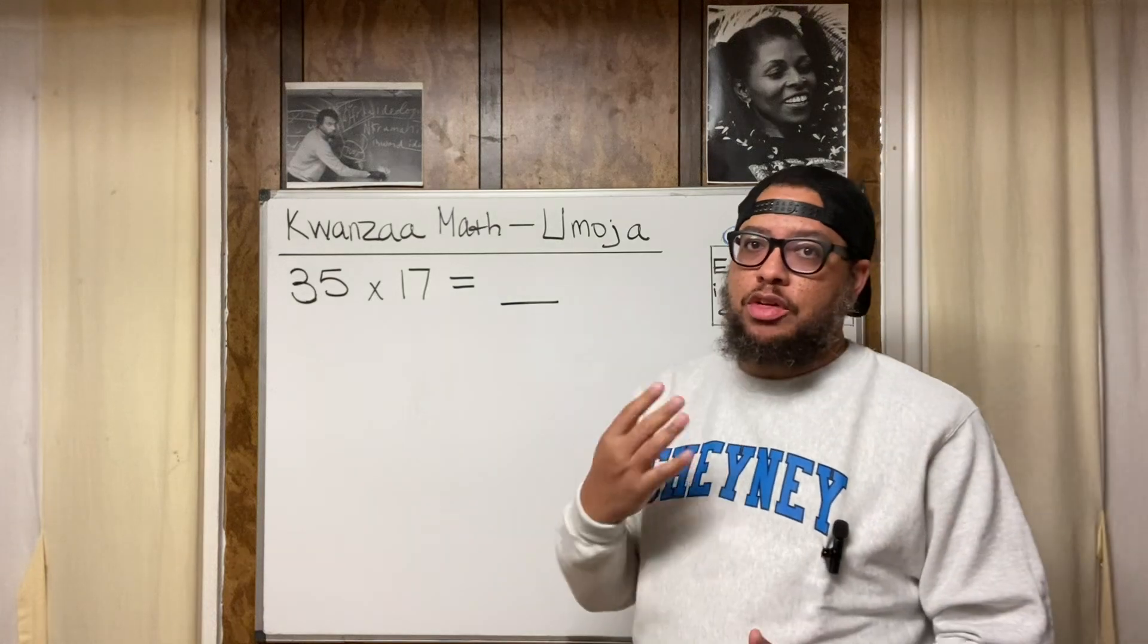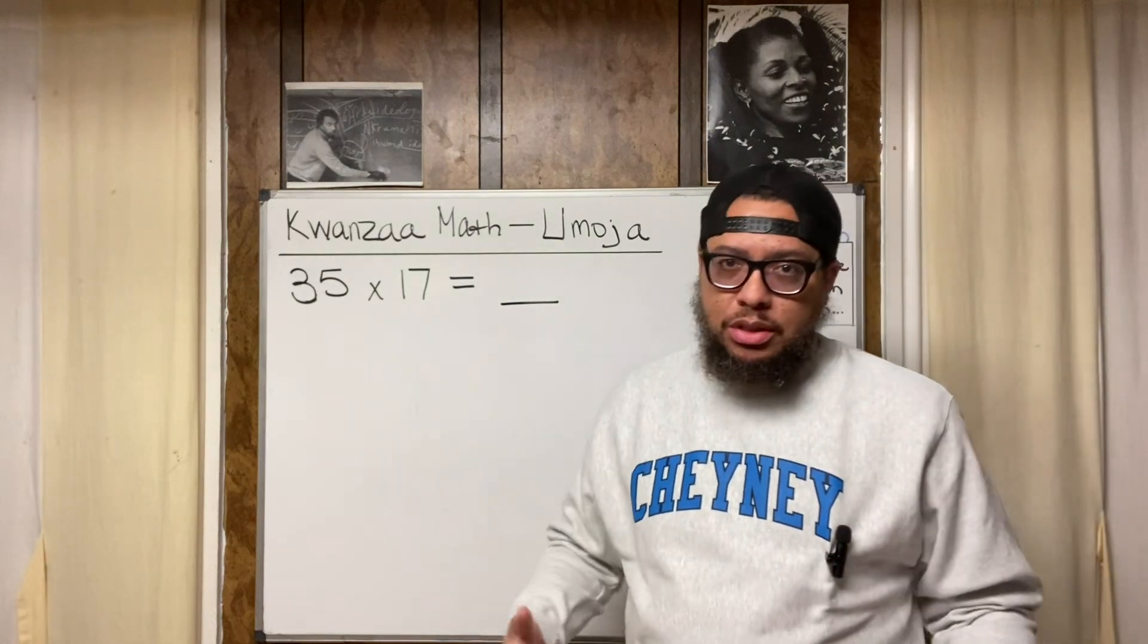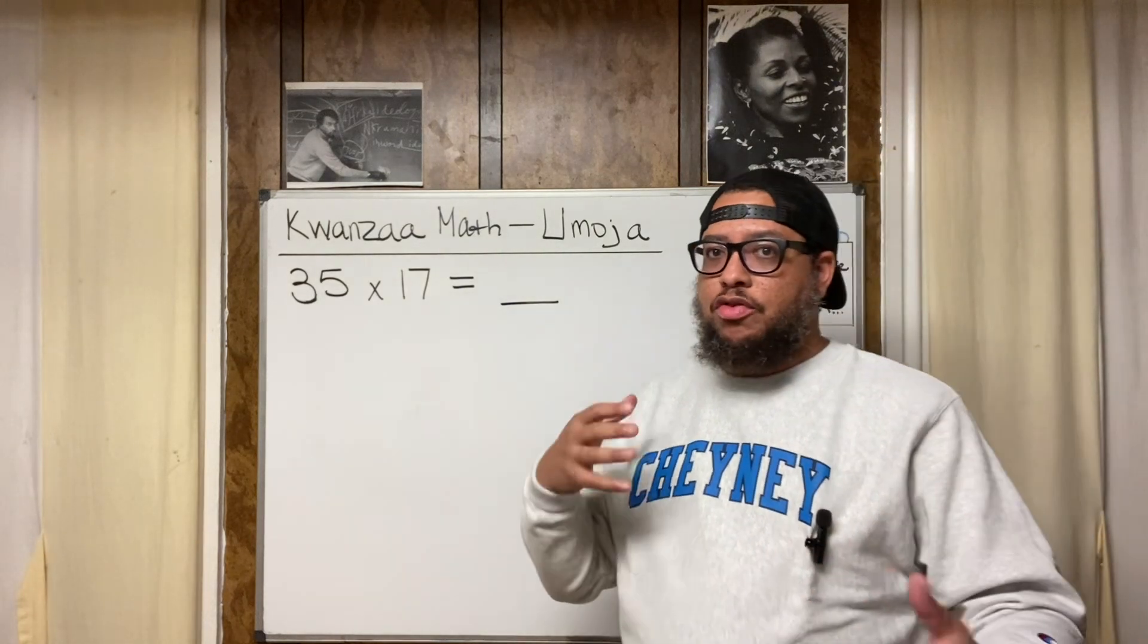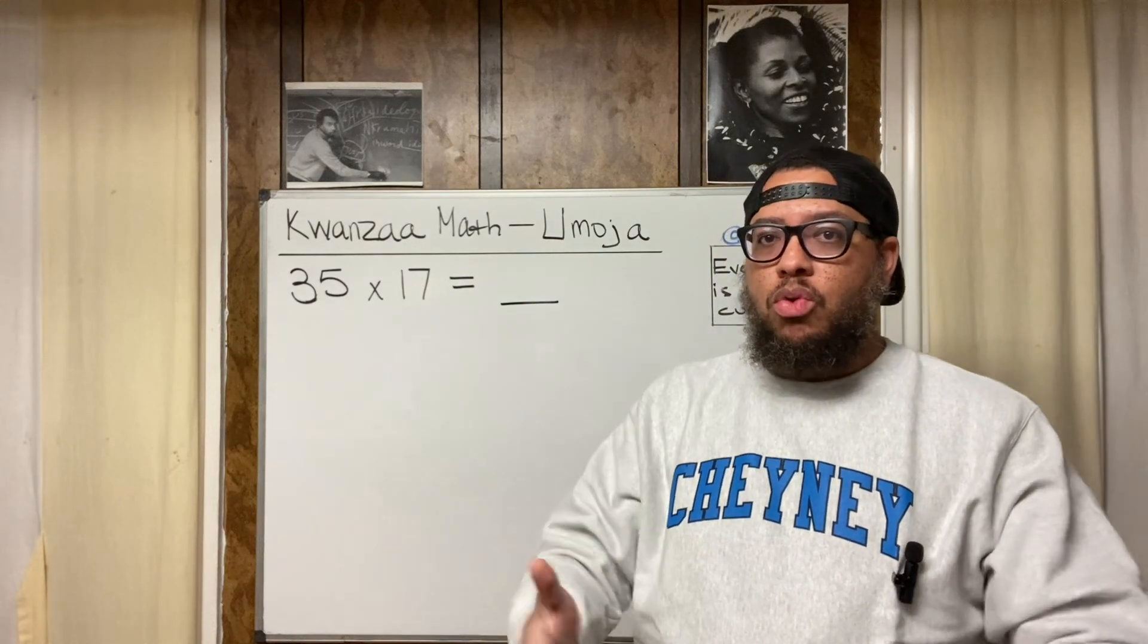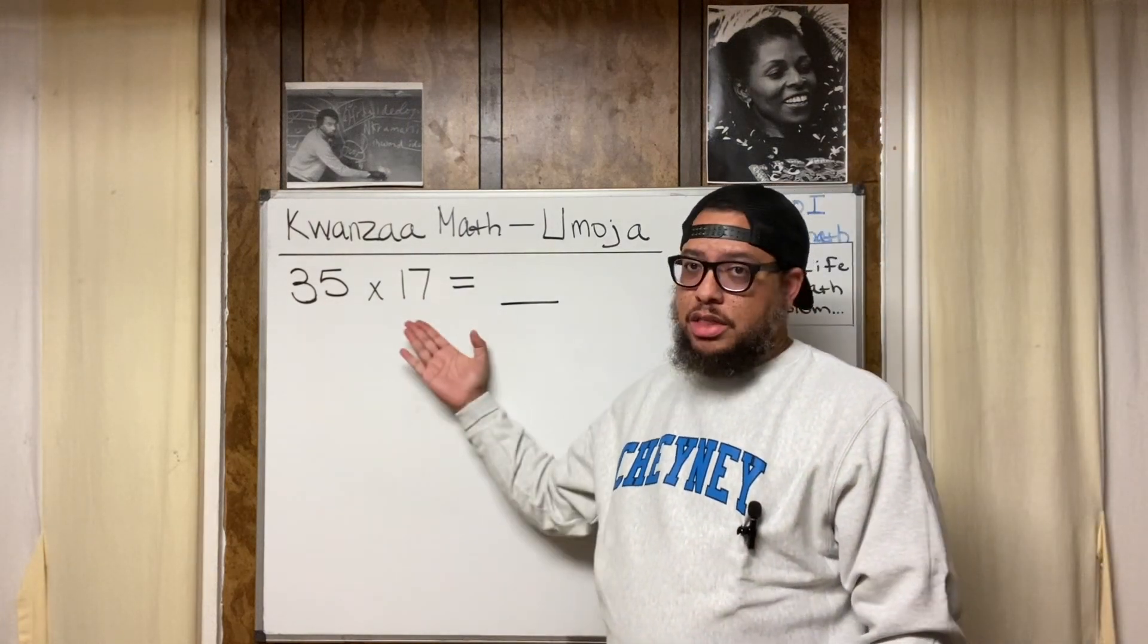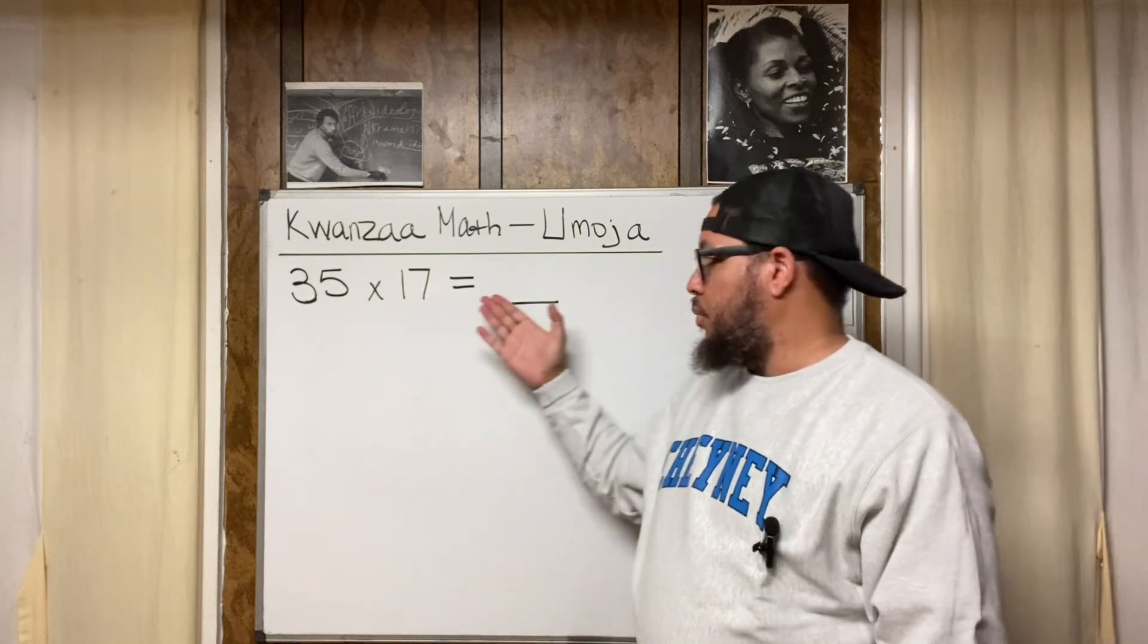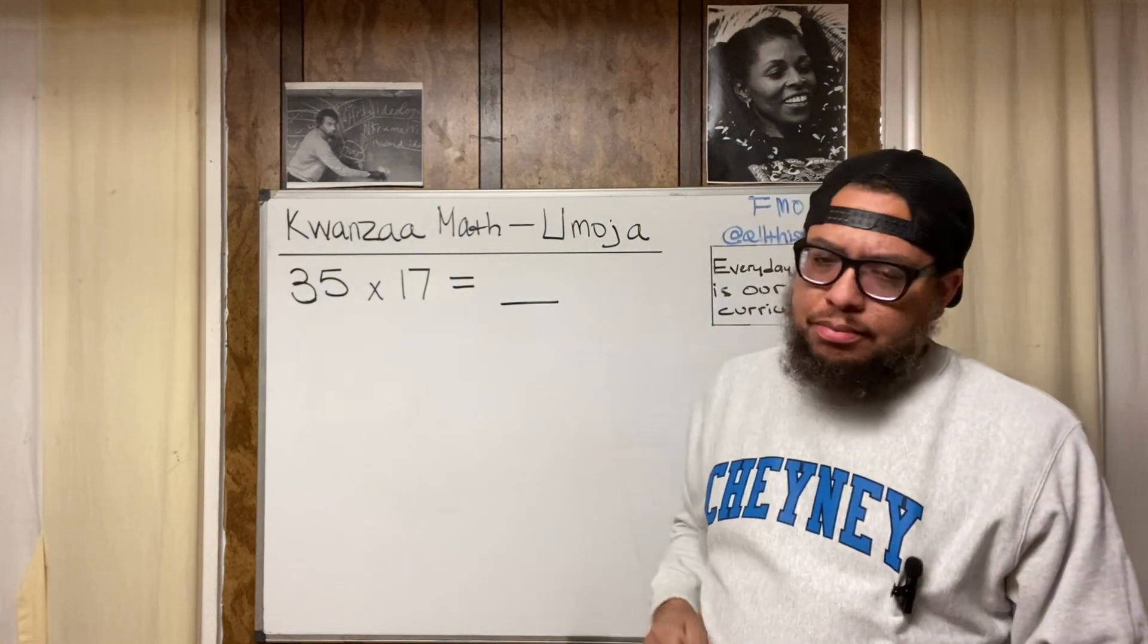Do the same multiplication problem in four different ways to show how we can have what I call operational unity. How we can do things in different ways. We can come from different backgrounds, have some differences of opinion, but still arrive at the same goal, still arrive at the same objective. Because our objective is to find a product of 35 and 17. 35 is a factor, 17 is a factor, and we want to know what the product is.